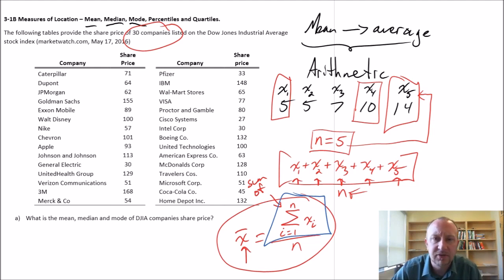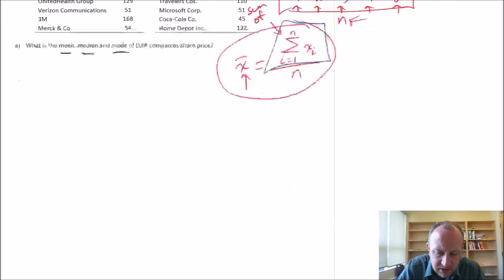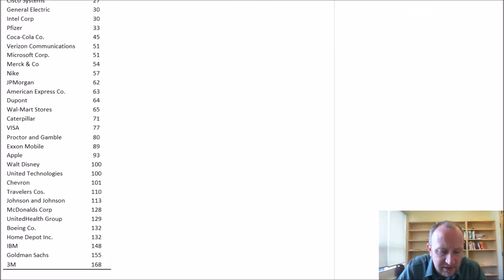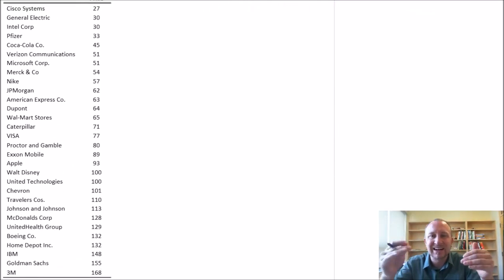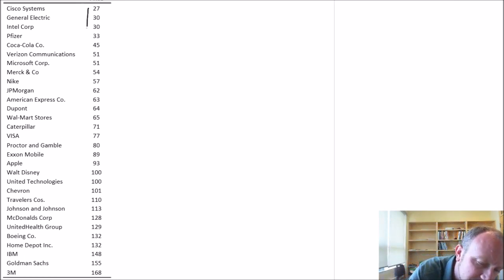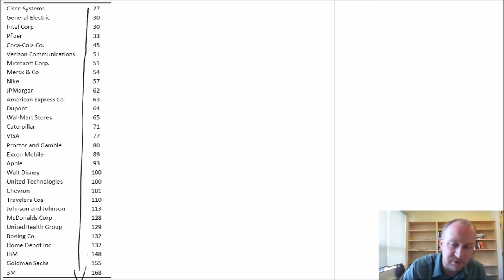So enough about this. Let's get into our exercise. We've got this list of 30 companies. We want to calculate the mean, median, and mode share price. I've already listed the companies, relisted them in one column from smallest value to the largest value.